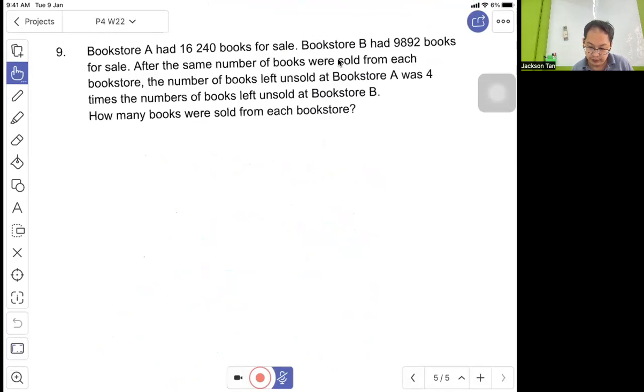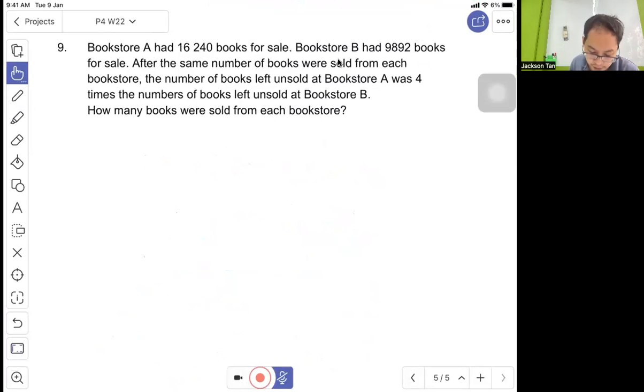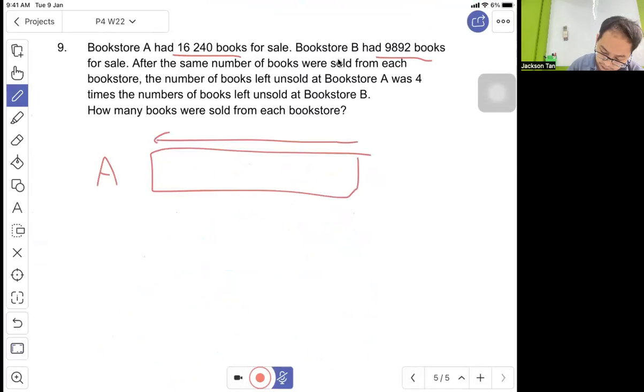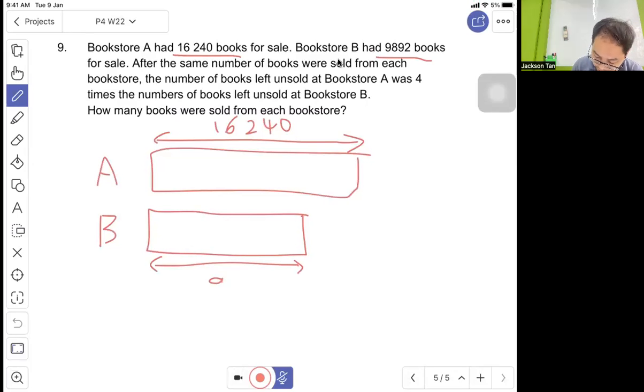Question 9: Bookstore A has 16,240 books for sale. Bookstore B has 9,892 books for sale. After the same number of books were sold from both bookstores, the number of books left unsold at Bookstore A was 4 times the number of books left unsold at Bookstore B.